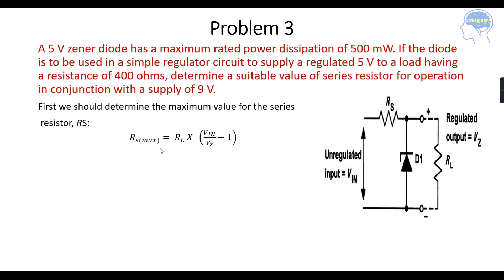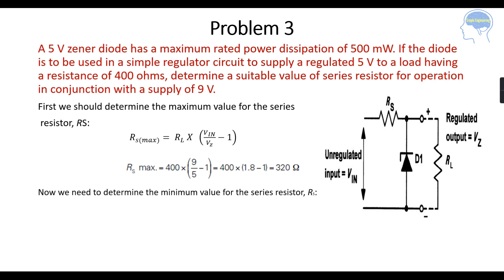We have to determine the maximum value for the series resistance RS. The equation is: RS maximum equals RL times (Vin divided by Vz) minus 1. Substituting: RL is 400 ohms, Vin is 9 volts, and Vz is 5 volts. RS maximum equals 400 times (9 divided by 5) minus 1, which equals 320 ohms.